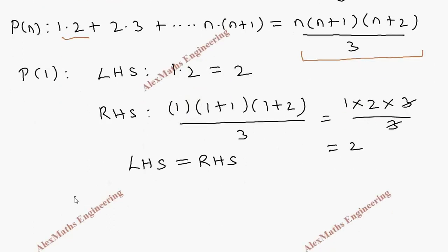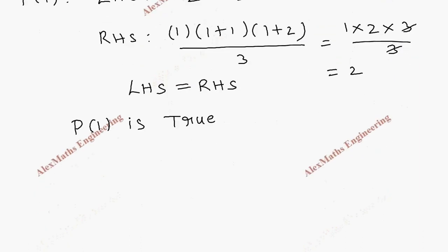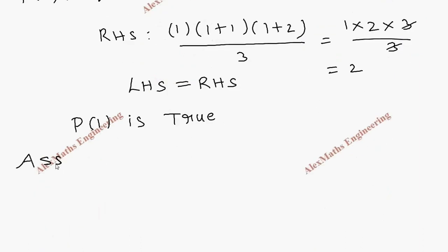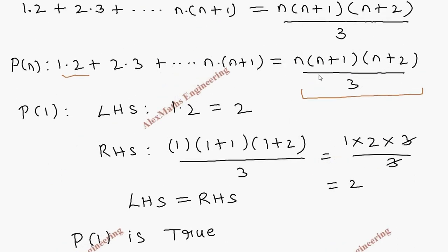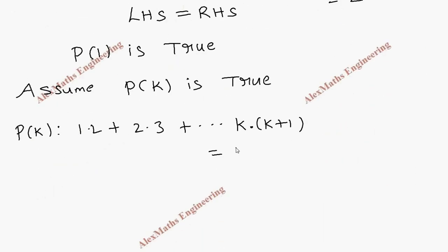Since LHS equals RHS, we can say P(1) is true. Since P(1) is true, we now assume P(k) is true. So we write the expression for P(k): 1·2 + 2·3 + ... + k(k+1) = k(k+1)(k+2) / 3.